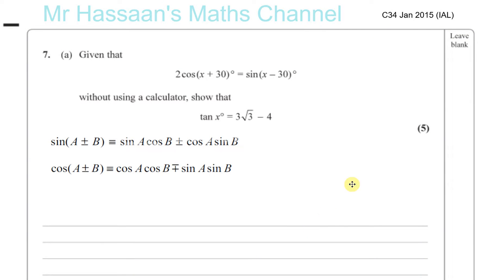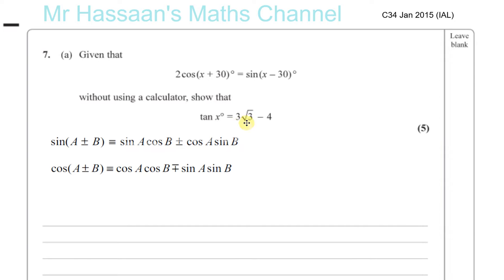Question number 7 from C34 January 2015 International A-Level. A question about trig ratios. Part A: given that 2 times cosine(x + 30) equals sine(x - 30), without using the calculator, show that tan x equals 3 root 3 minus 4.